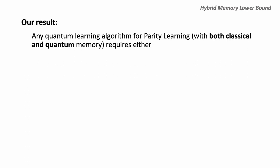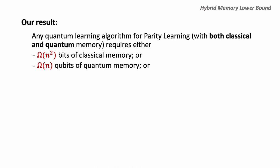In this work, we make progress towards understanding parity learning with quantum memory, and we prove lower bounds for learning algorithms with hybrid memory — meaning the algorithm has access to both classical and quantum memory. Specifically, we show that a quantum learning algorithm for parity learning requires either quadratic bits of classical memory, or a linear amount of qubits of quantum memory, or an exponential amount of samples.